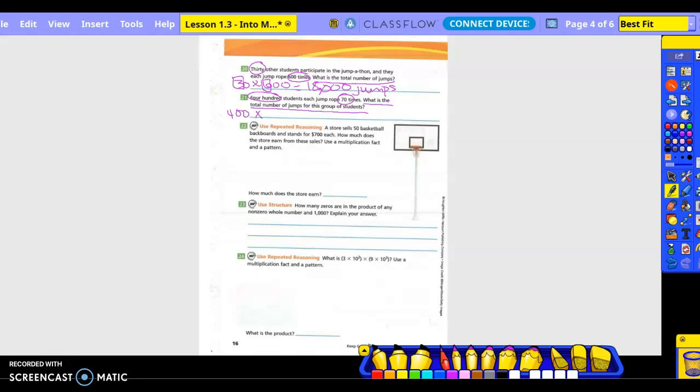So 400 times 70. 4 times 7 is what? 28, and add how many zeros? Three. Come back three from the right, so 28,000 jumps. Question.